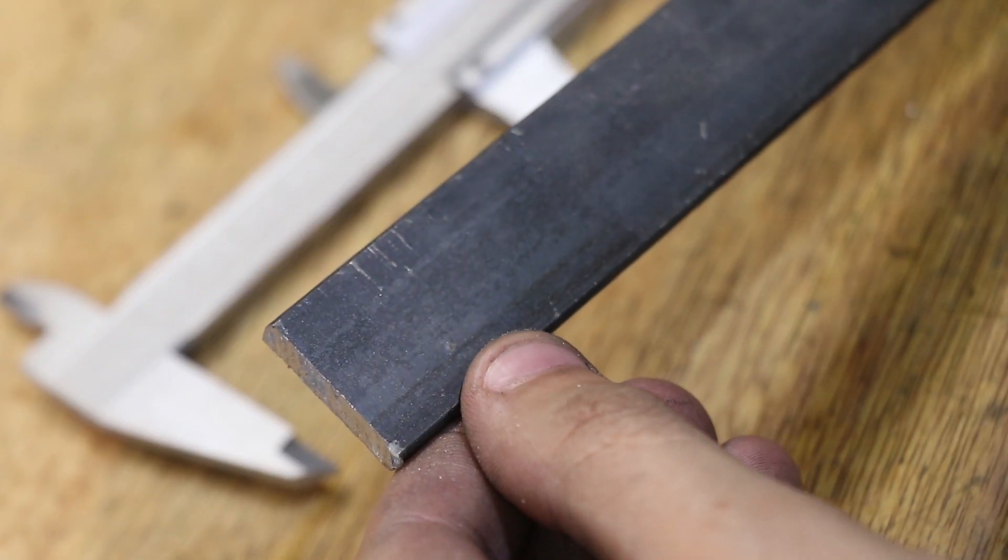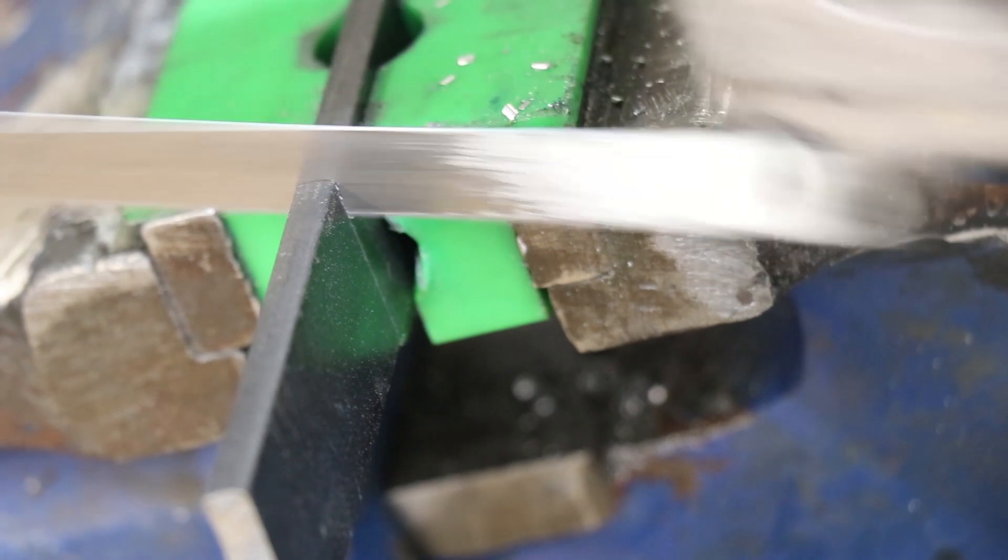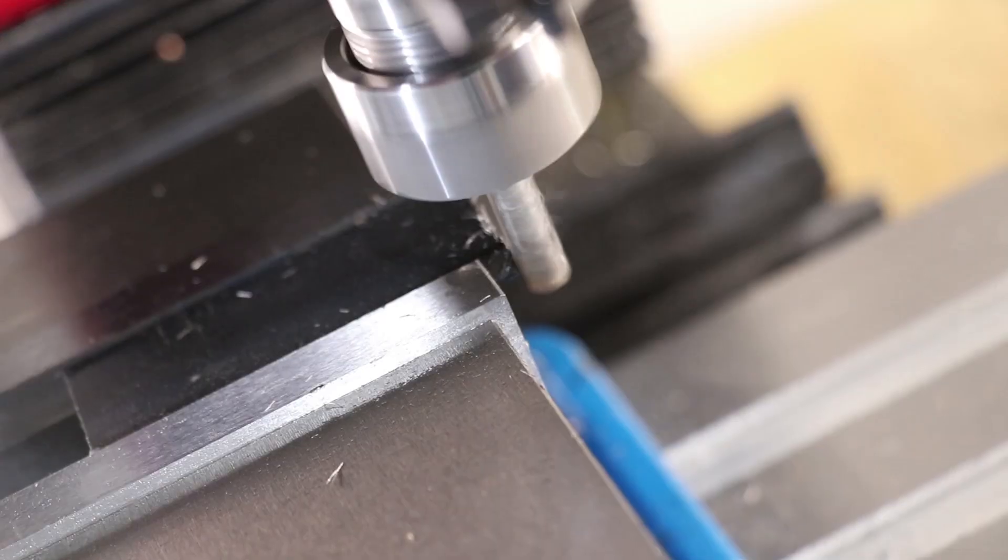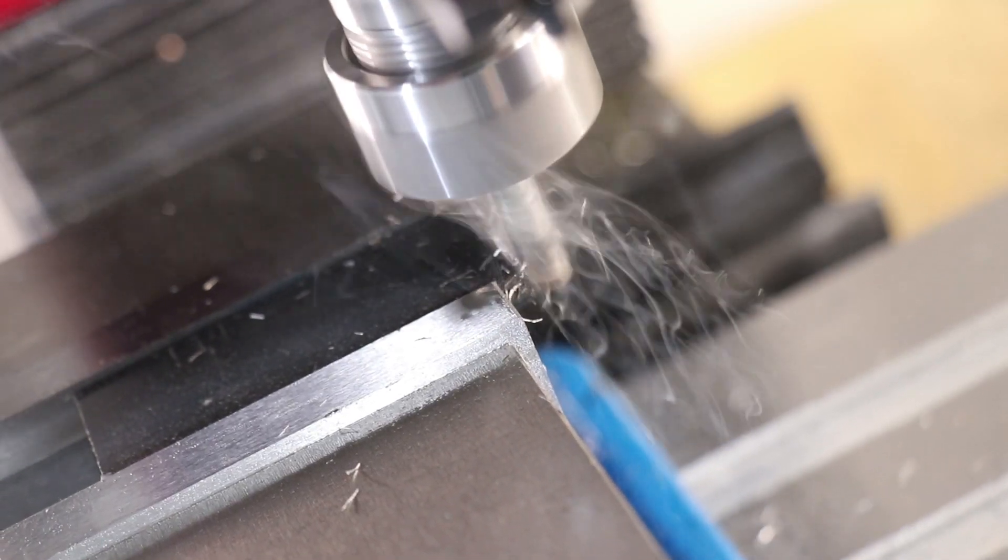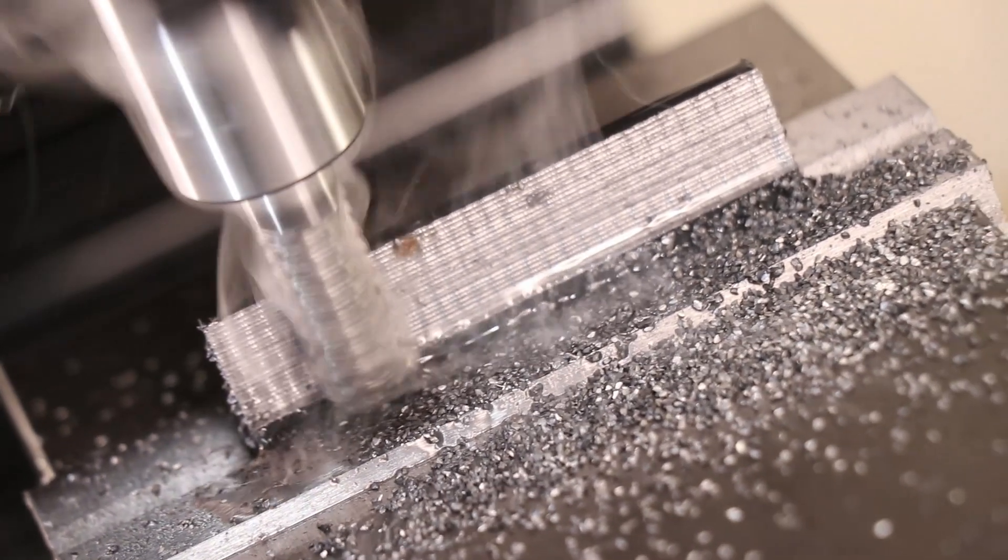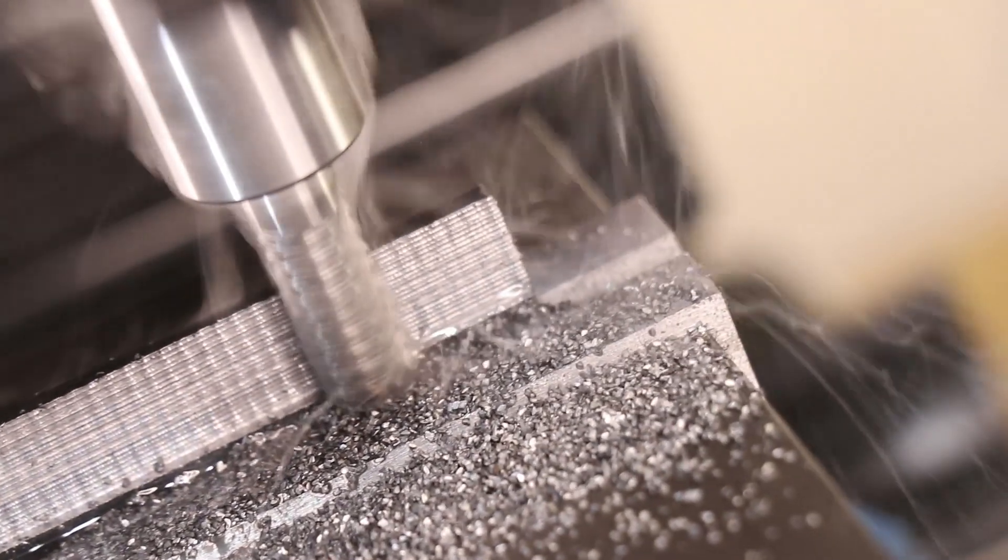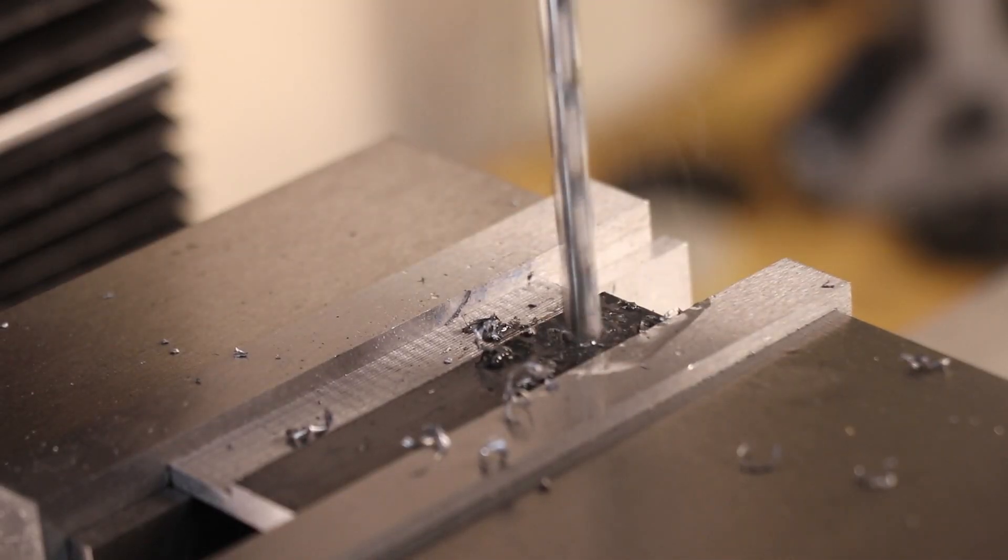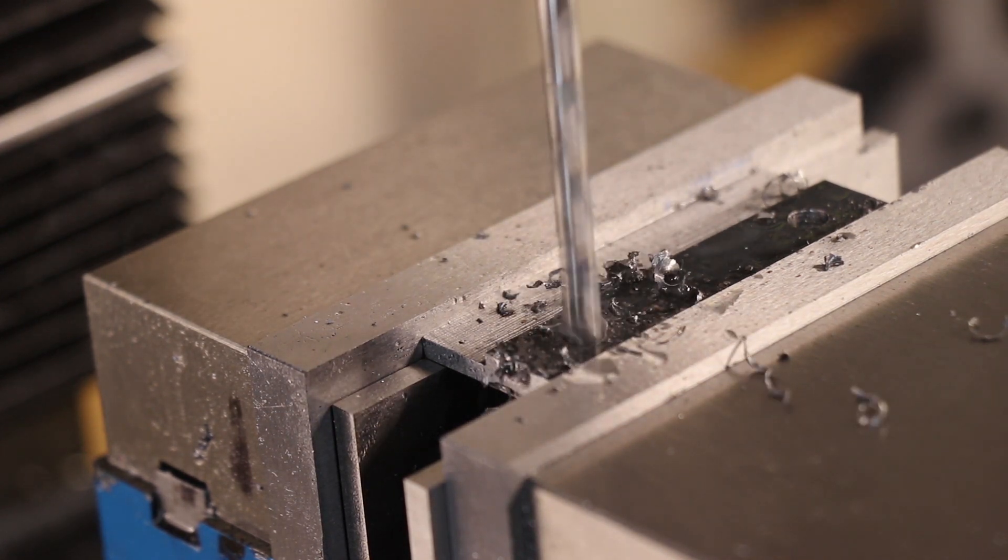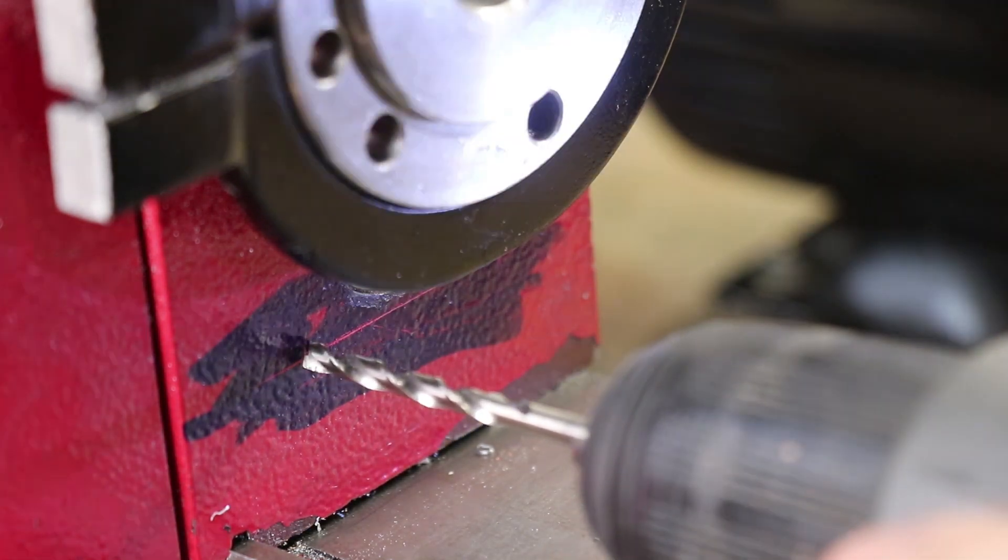I'll start off by cutting off a piece of steel bar. I'll clean it up in the mill, and then I'll use the mill to cut a step down. I'll drill two holes so I can bolt it in. Now there aren't any existing holes that I can use, so I'll mark out two holes, and then I'll drill and tap them.